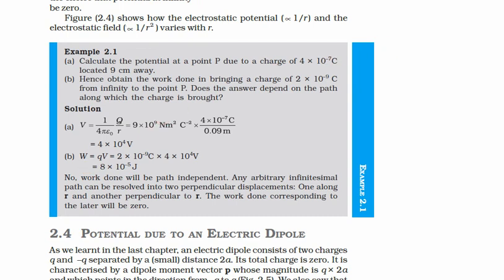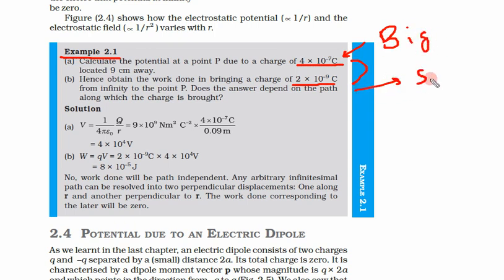Example 2.1: Calculate the potential at point p due to a charge q equal to 4 × 10⁻⁷ coulomb located 9 centimeters away. Also obtain the work done in bringing a charge of 2 × 10⁻⁹ coulomb from infinity to that point p. The second charge is very small so it will not disturb the position of the bigger charge.